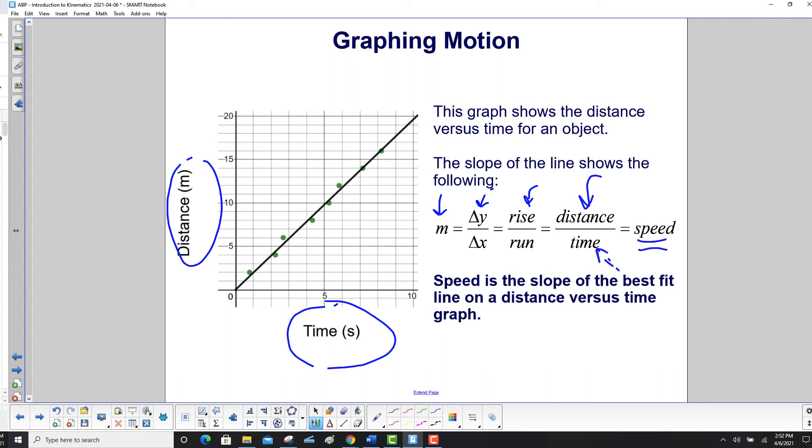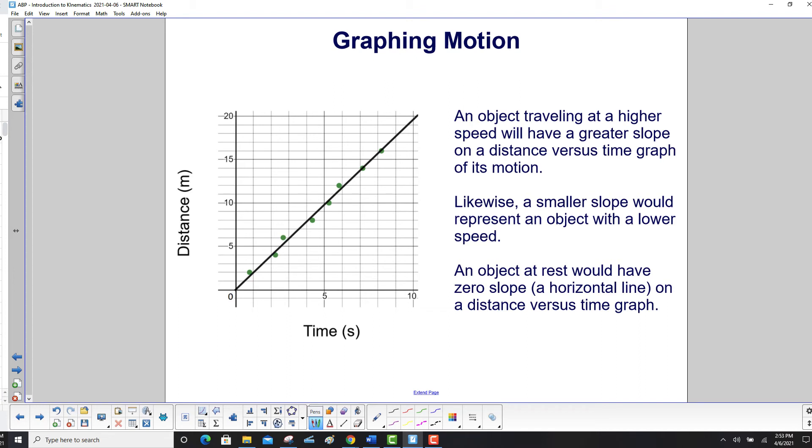So speed is the slope of the best fit line on a distance versus time graph. An object traveling at a higher speed will have a greater slope on a distance versus time graph of its motion. A smaller slope would represent an object with a lower speed. And finally, an object at rest would have zero slope. That would be a horizontal line on a distance versus time graph.